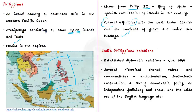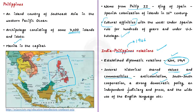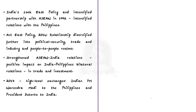India and the Philippines formally established diplomatic relations in November 1949, shortly after both countries gained independence. The Philippines gained independence before India in 1946. Relations between the two countries have been friendly, and both share historical values such as anti-colonialism, South-South cooperation, a strong democratic polity, an independent judiciary and press, and wide use of the English language. When India launched her Look East Policy in 1992 and intensified partnership with ASEAN, this resulted in intensified relations with the Philippines. With the Act East Policy initiated in 2014, the relationship diversified further, with cooperation in political security, trade, and people-to-people relations.